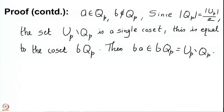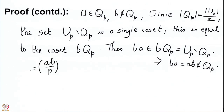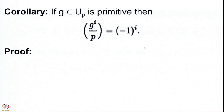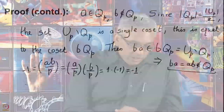The computation gives (AB/P) = −1 since AB is not in Q_P, and this equals (A/P)·(B/P) = 1·(−1) = −1. So the case A in Q_P and B not in Q_P is done. Now we deal with the final case where both A and B are not in Q_P.